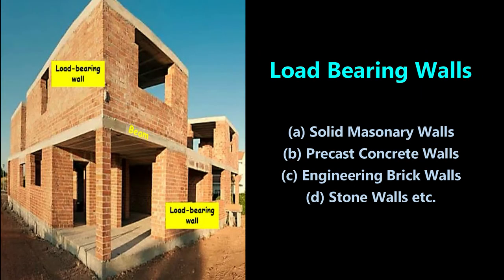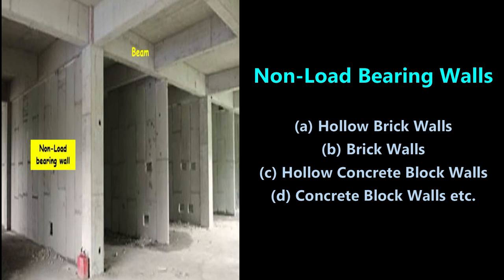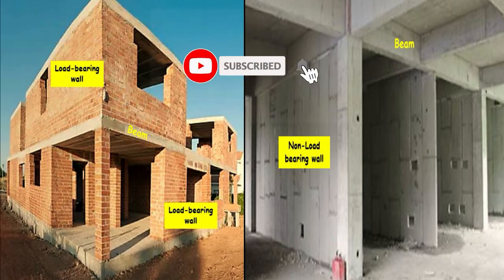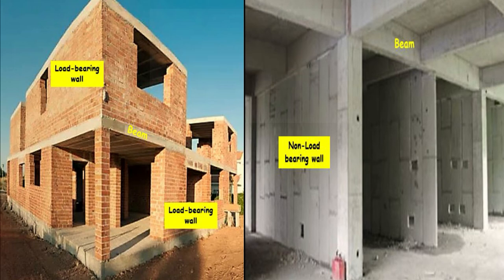Based on the materials used for construction, the types of load-bearing walls include solid masonry walls, precast concrete walls, engineering brick walls, stone walls, etc. For non-load-bearing walls, types based on material include hollow brick walls, brick walls, hollow concrete block walls, concrete block walls, etc. The best examples of load-bearing walls are almost all external walls in a building, and shear walls are also considered load-bearing. The best example of a non-load-bearing wall is the partition wall constructed inside the building.